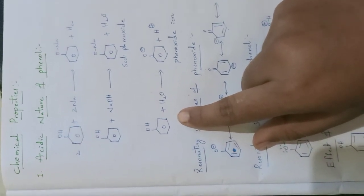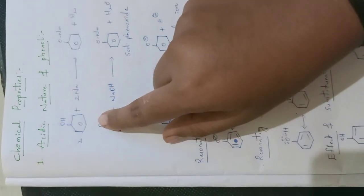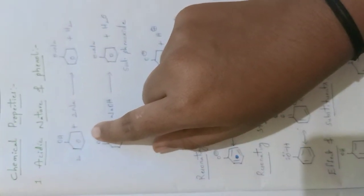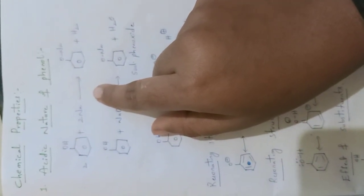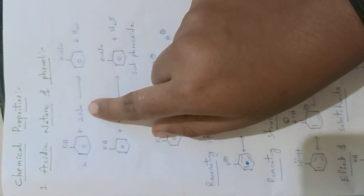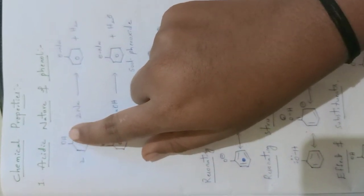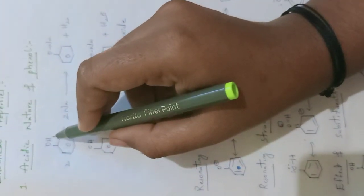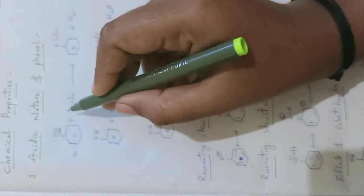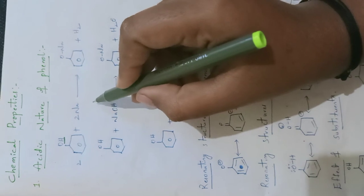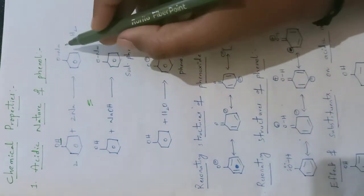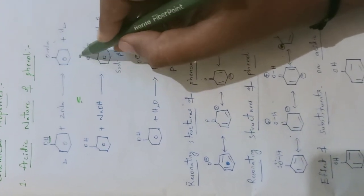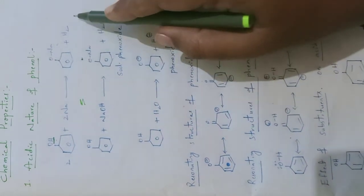The acidic nature of phenol can be explained by treating phenol with metals or metallic hydroxides. For example, if phenol is reacted with sodium metal, the hydrogen present on this phenol can be eliminated as H₂. Here I have taken two moles of phenol, so two hydrogen atoms are present. These two hydrogens can be replaced by sodium metal to form sodium phenoxide, eliminating hydrogen gas.